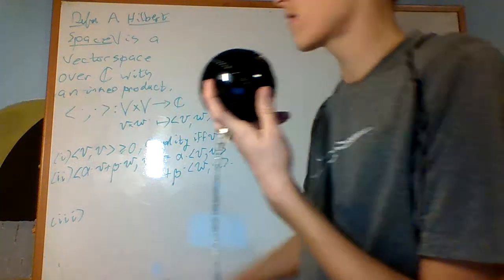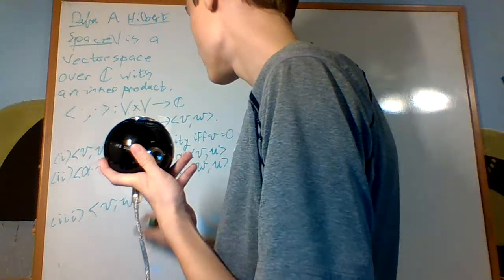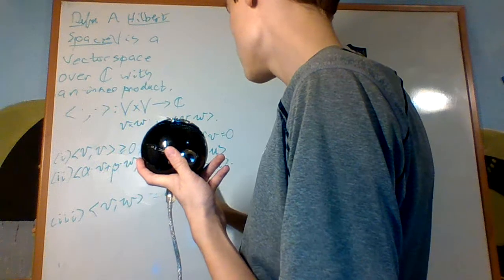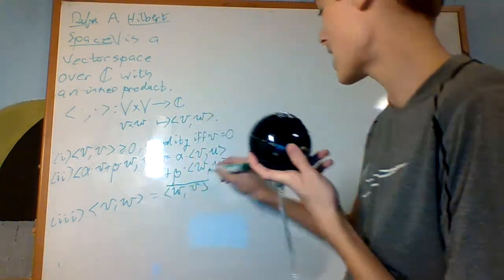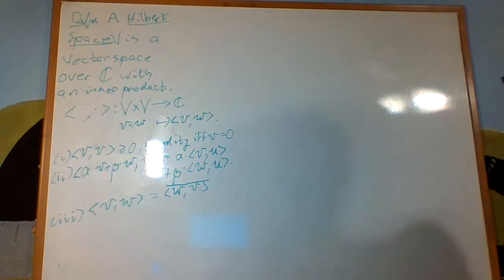And thirdly, is that we're going to have that the product between V and W is equal to the inner product of W with V complex conjugate. So it's conjugate symmetric.